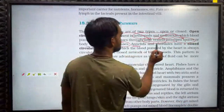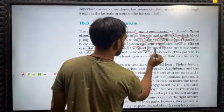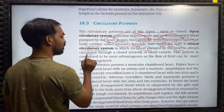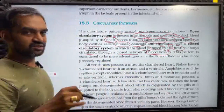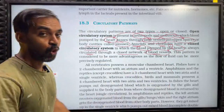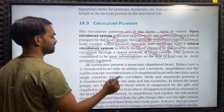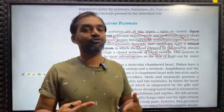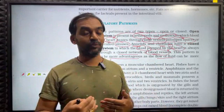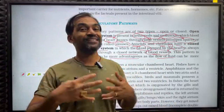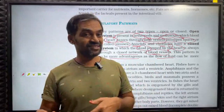Annelids and chordates have a closed circulatory system, in which blood pumped by the heart is always circulated through a closed network of blood vessels — heart to blood vessels and back to heart. This pattern is considered more advantageous as the flow of fluid can be more precisely regulated. In the open system, there is mixing of oxygenated and deoxygenated blood, but in closed circulatory system there is no such mixing.